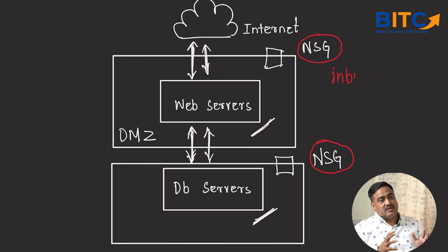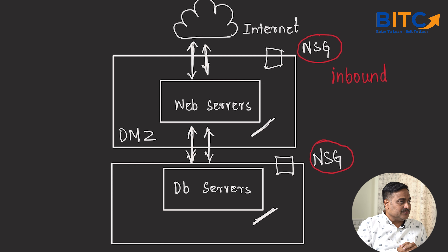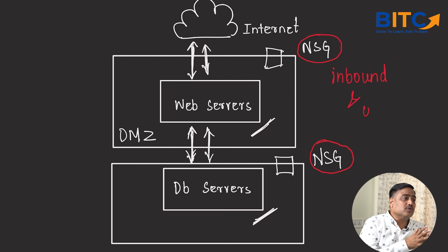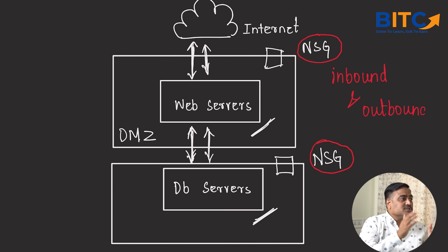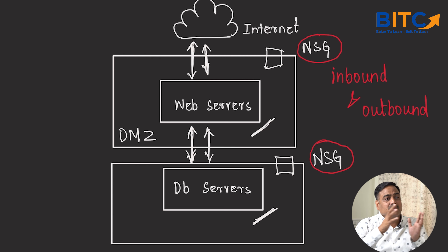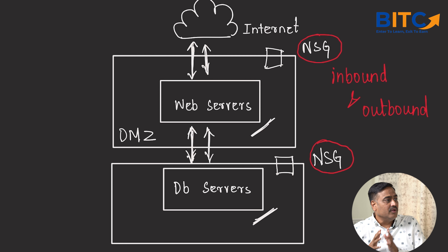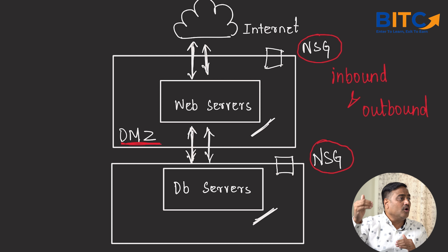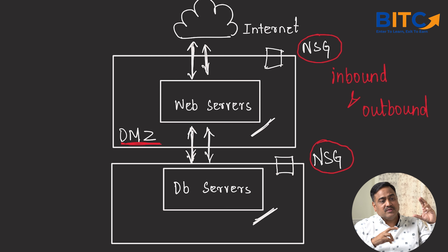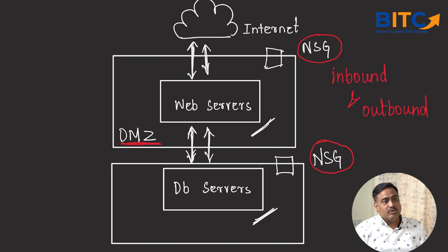You can put an NSG at the subnet level and set inbound and outbound rules for it. The subnet exposed to the internet — also called the DMZ — can have rules allowing certain traffic into its virtual machines, while the database servers in a different subnet have an NSG that does not allow traffic from the internet.